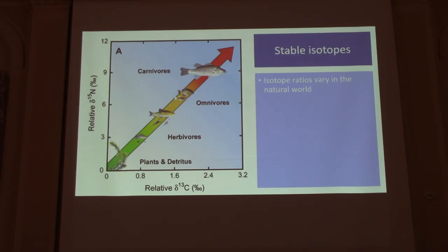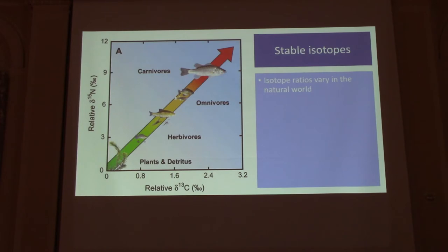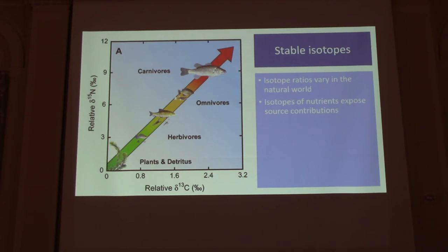Now I'll talk a little about stable isotopes. Gut content is a great tool — it gives you up-to-the-minute, instantaneous information about what's in the animal's diet. But it doesn't necessarily tell you what the animal uses to build its body, only what it's consuming. There are biases, especially when dealing with different animals that have different levels of digestive efficiency — hard-to-digest versus easy-to-digest items. Stable isotopes get around some of those issues. Stable isotopes vary in the natural world, which is useful because you are what you eat. Isotopes give you the long-term running average as opposed to an instantaneous look.